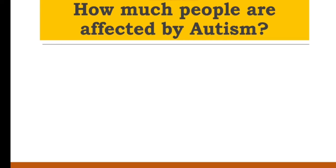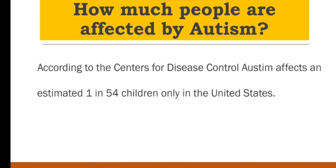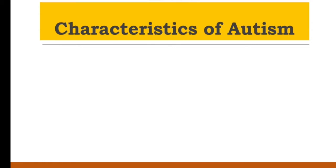How much people are affected by autism? According to the Centers for Disease Control, autism affects an estimated 1 in 54 children only in the United States.